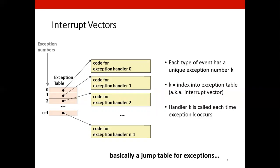Now let us see what kind of exceptions do we have. There are two types of interrupts. The first is the asynchronous exceptions, also known as interrupts. Why are they called asynchronous? Because they are caused by events external to the processor.